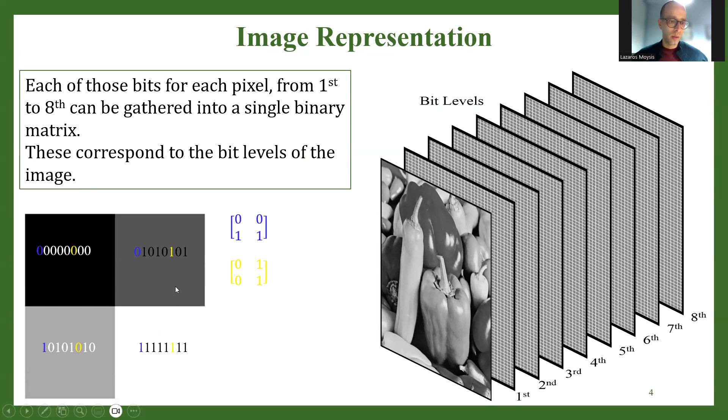So what do we do? I have colored it here as an example. Let's think about this 2x2 small image. After I perform this binary representation, I take each of the first bits. So for all pixels, I take the first bit from each value and I put it in a matrix. This matrix can be represented as an image, but it only has zeros and ones, so it's a binary image, only black and white. This is the first bit plane.